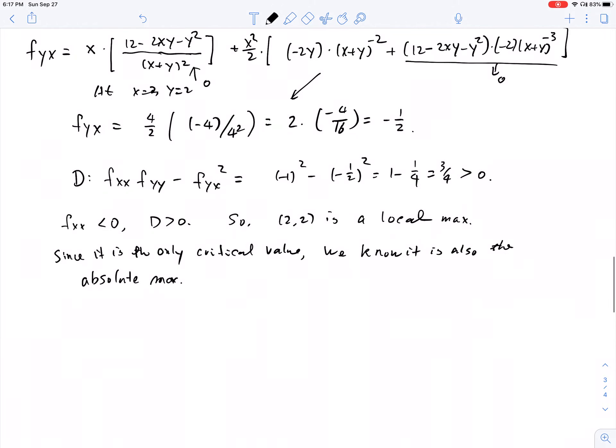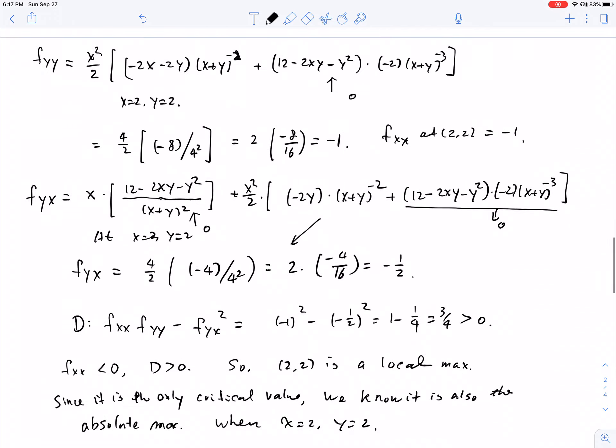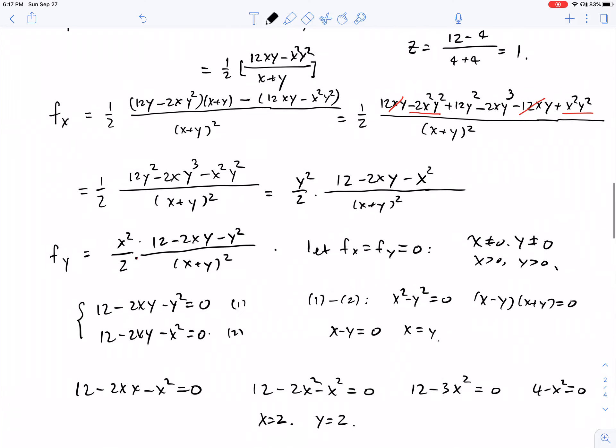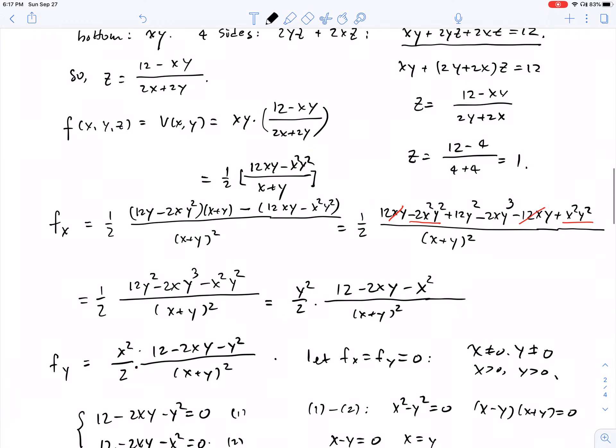And we can also find z. When x equals 2 and y equals 2, we know z is going to equal, we have the formula back over here, it's going to be 1. So z equals 1.